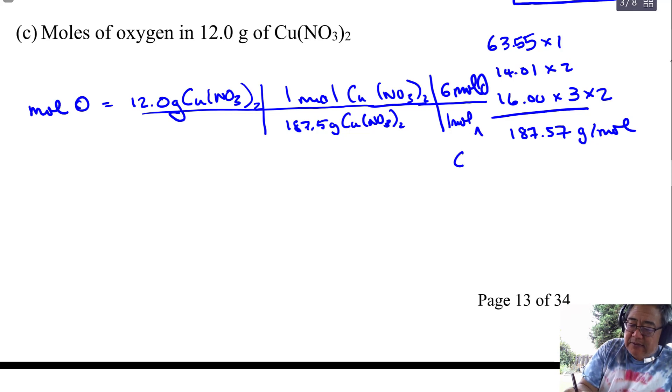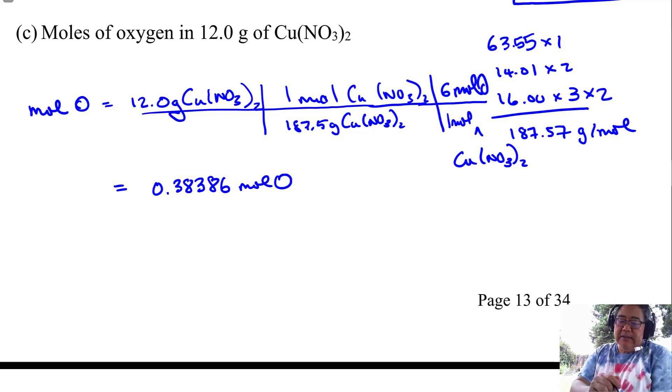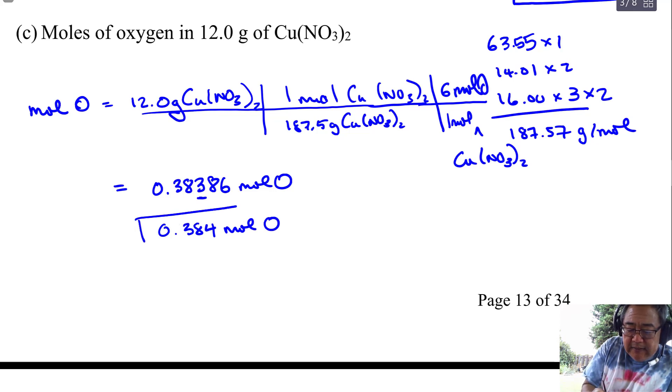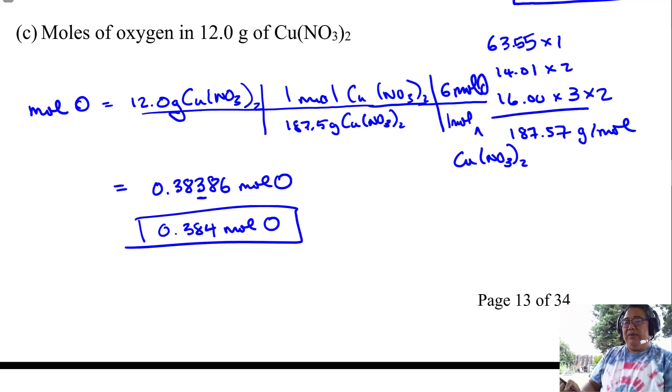And then one more step because I want moles of oxygen. And so I'm going to say six moles of oxygen for every one mole. And then I'm going to squeeze this in here. Cu(NO3)2, copper nitrate, like that. And so then we'll do our calculation. So I did the calculation. And this is what I get. And then I have three significant figures. So I'll round it at that place here. So 0.384 moles of oxygen, like that. And again, on your homework, try to report the unrounded and the rounded number both.